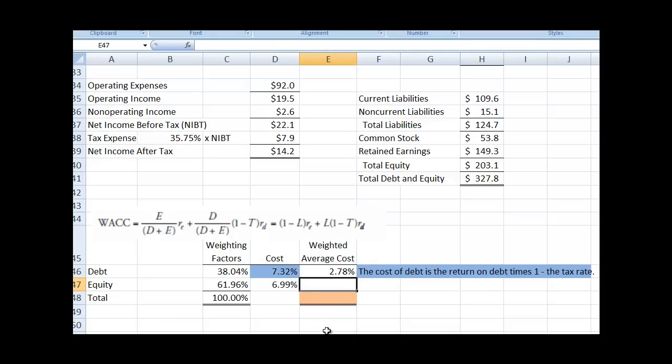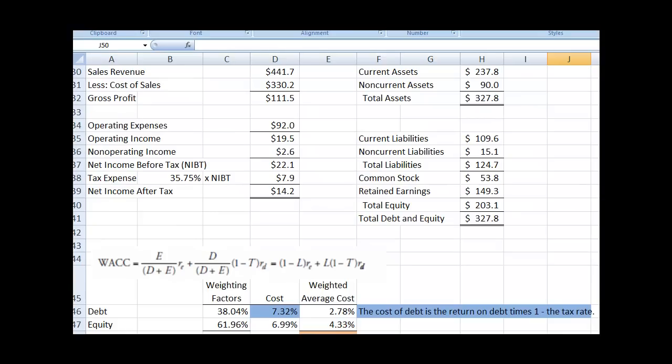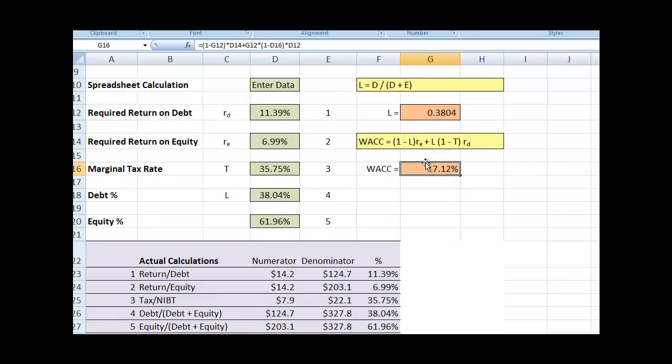Now we're going to get our weighted average cost of equity. And we can do that by taking the 61.96% and multiply that times our return on equity. And we have that. And now all we have to do is total that up. And we can take our auto sum. And there you have it. And notice that the 7.12% is the same thing you have up above.